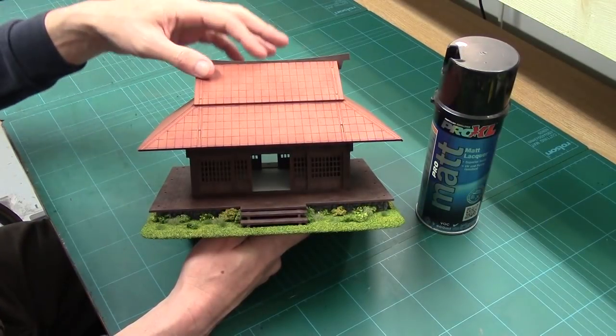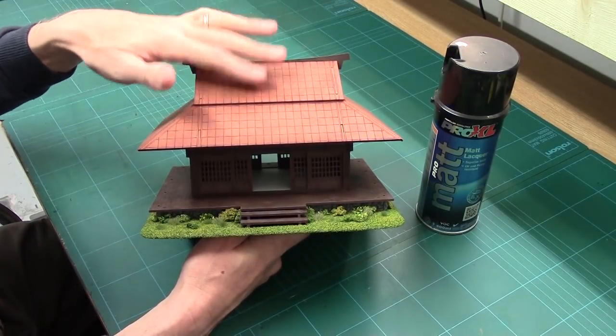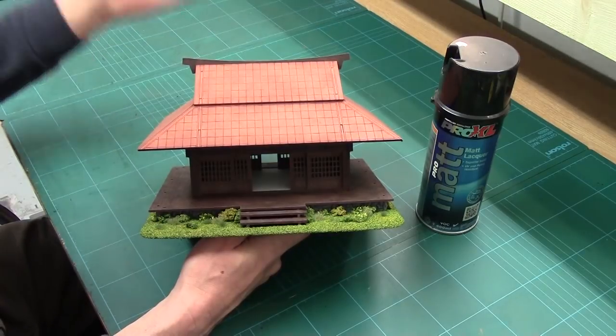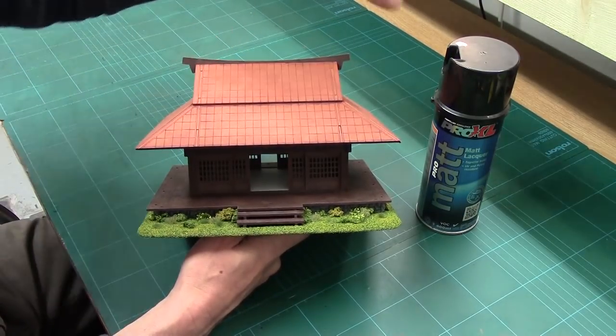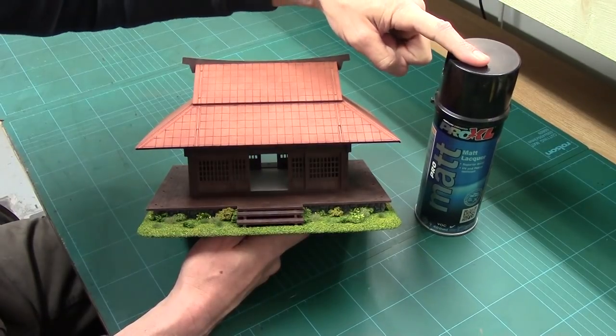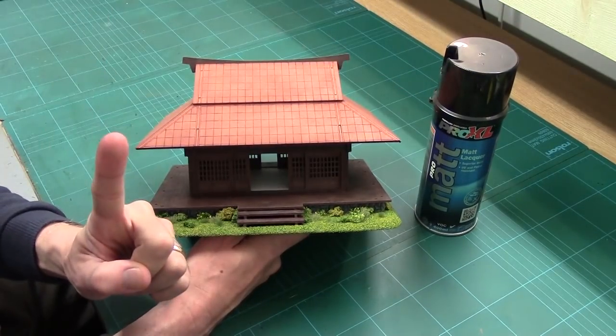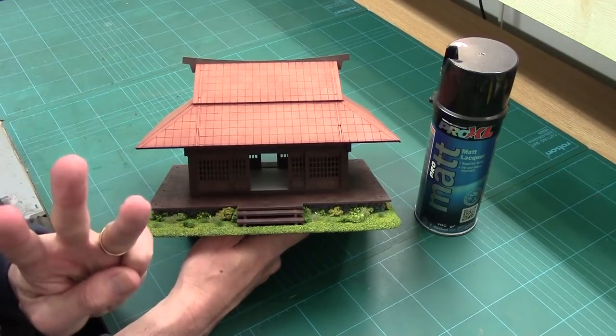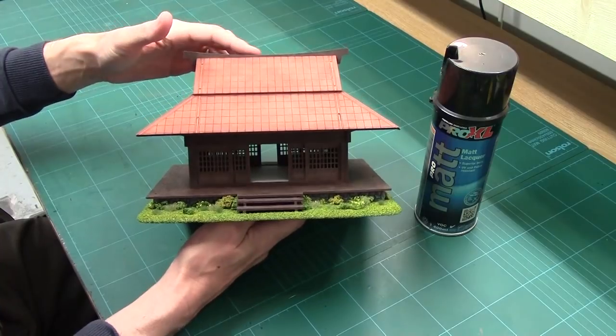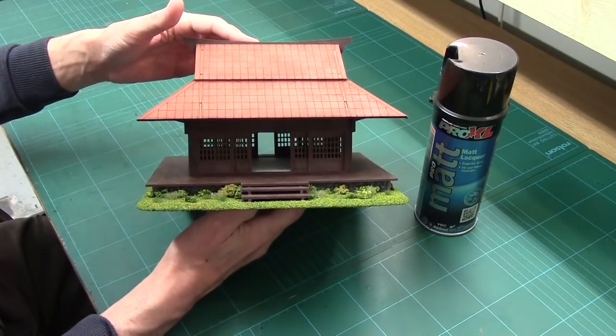And my final tip, varnish it. MDF buildings, because they're wood and they're flat surfaces, are notorious for getting scratches on them. So they need sealing. I use car matte lacquer to seal mine. And I work on the basis of one coat for personal use, two coats for club, three coats for store and tournaments. Remember you've put the effort in, so protect the effort.